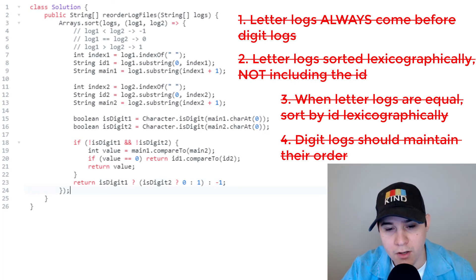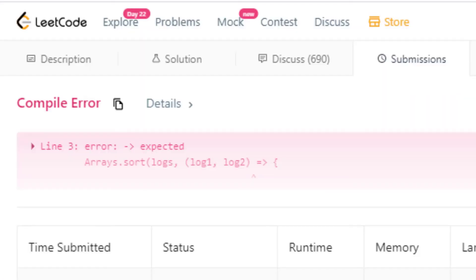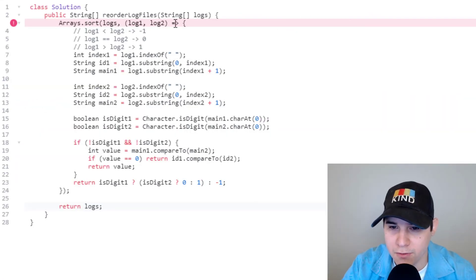And then finally, when we come out of this sorting, we just need to return our logs. So let's make sure the solution works. I use the wrong character for the lambda function. This needs to be a dash. Let's submit again.